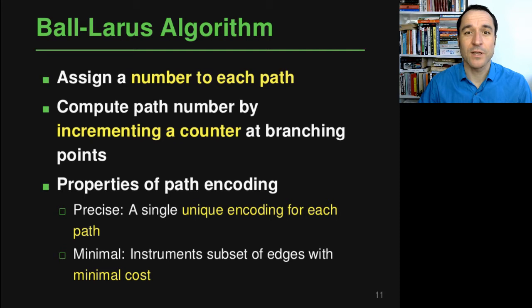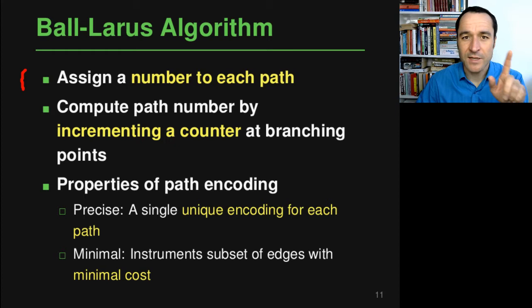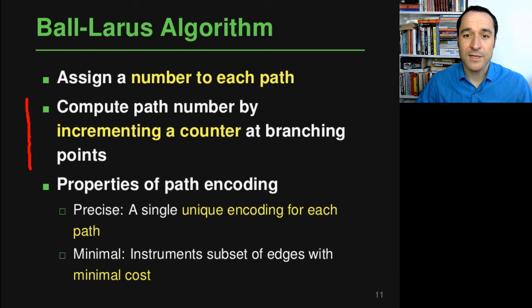Let me start with a one-slide summary of the Ball-Larus algorithm. It's named after Tom Ball and Jim Larus, two computer scientists interested in compilers and related topics. In a nutshell, the algorithm starts by assigning a number to each path through the graph — each path through a control flow graph gets one number. It then computes this number while traversing the graph by incrementing a counter at every branching point, starting at the entry node, so that at the end the sum of increments tells us which path was taken.